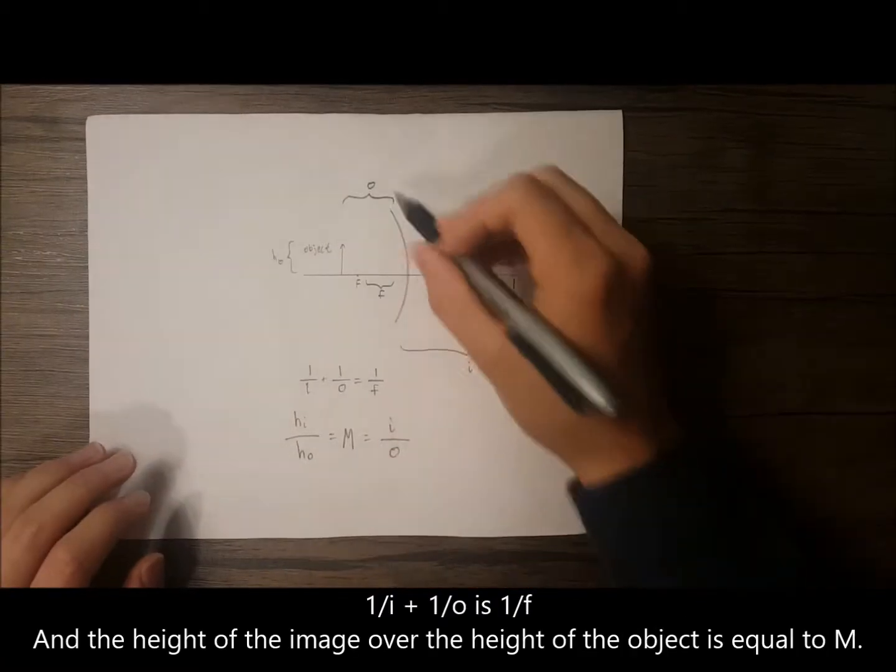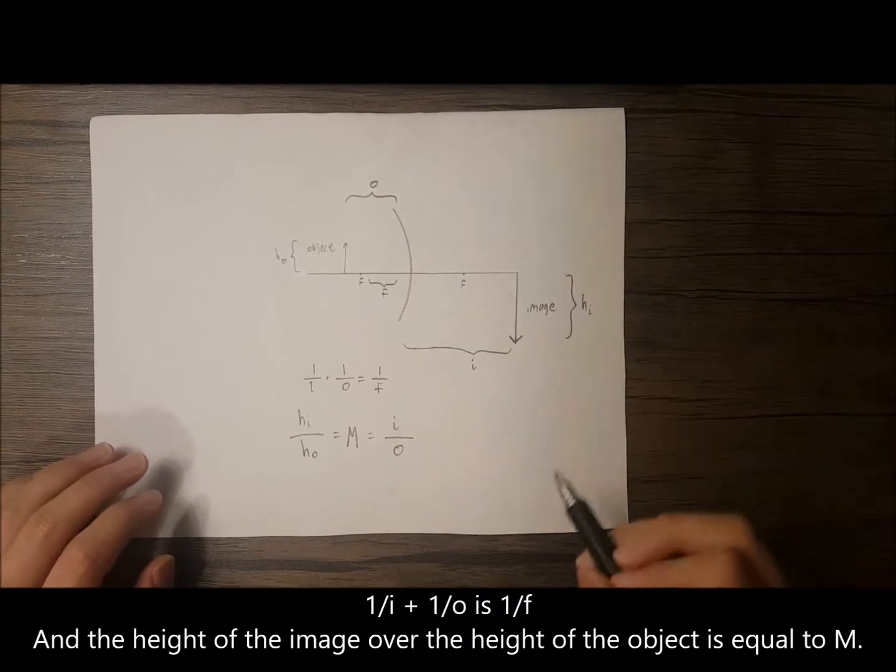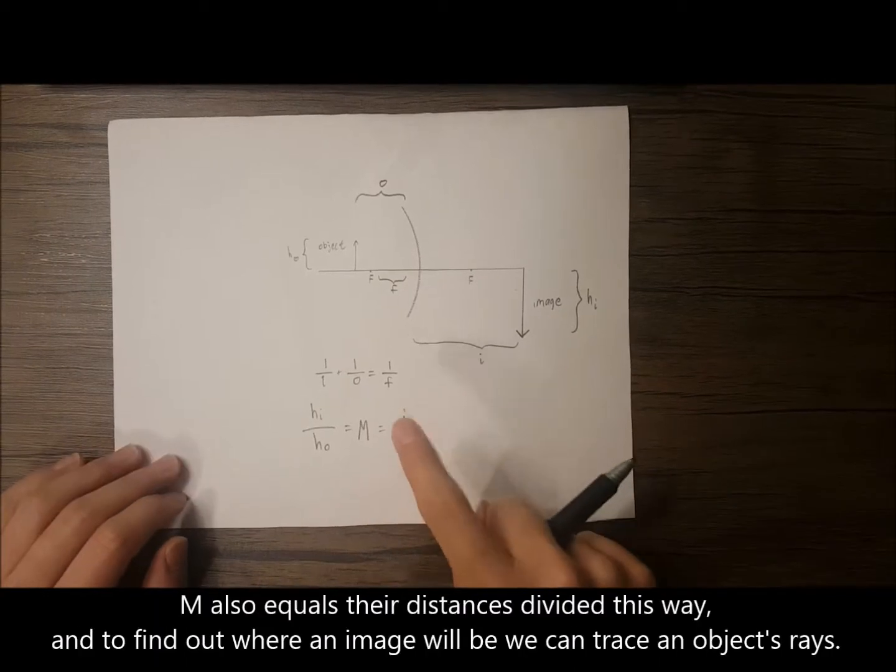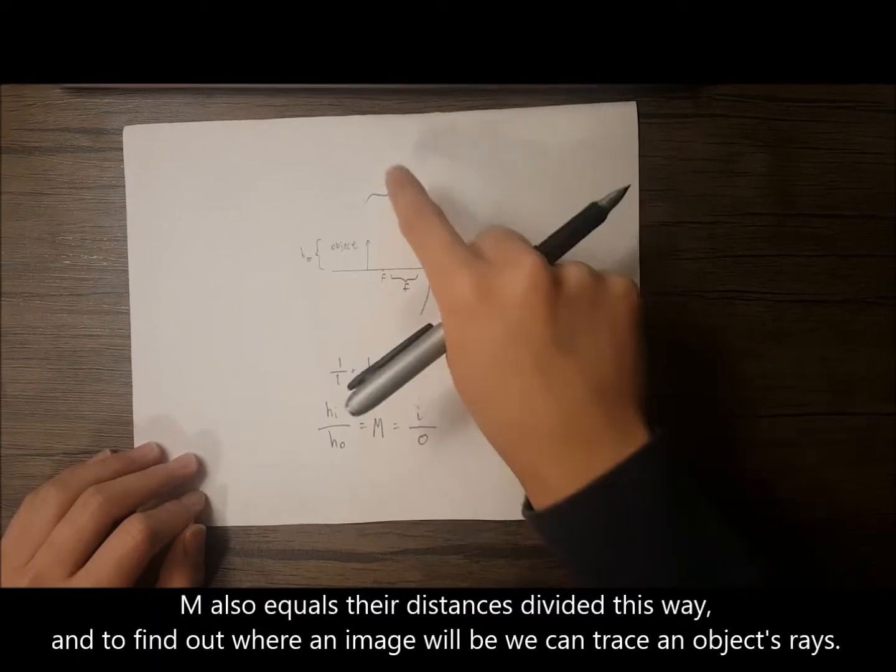1 over i plus 1 over o is 1 over f, and the height of the image over the height of the object is equal to m. m also equals their distances divided this way.